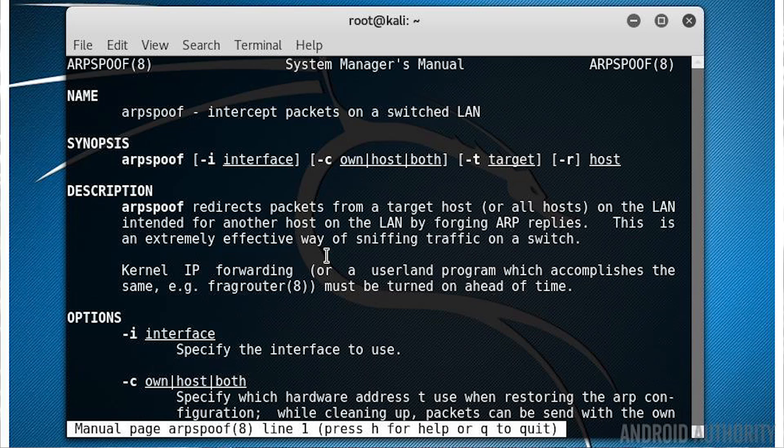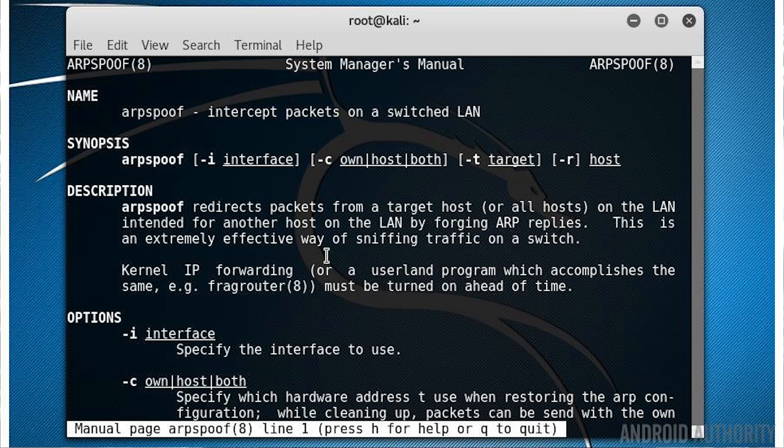So someone comes along and says, hey, who owns this address? And you say, I do. But you don't. You don't own it at all. But you lie. You get your PC to lie about the fact that it owns the address. And that means now traffic that was going to go to one place, probably the router, now comes to you. And once it comes to you, again, you can then do lots of different things, like phishing attacks, man-in-the-middle attacks.